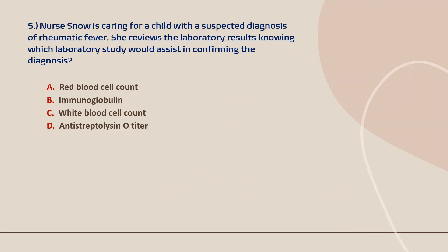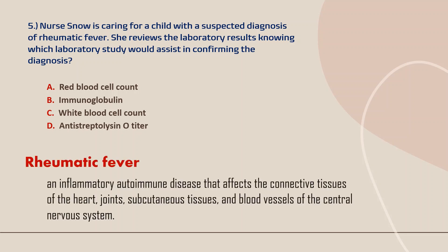Question number five. Nurse is caring for a child with a suspected diagnosis of rheumatic fever. She reviews the laboratory results knowing which laboratory study would assist in confirming the diagnosis. Rheumatic fever affects the connective tissues of the heart, joints, subcutaneous tissues, and blood vessels of the central nervous system. The laboratory result that will assist in confirming the diagnosis is a positive antistreptolysin O titer.